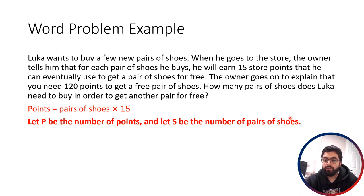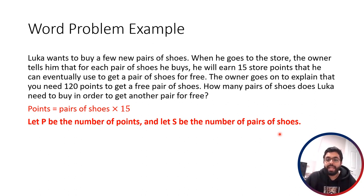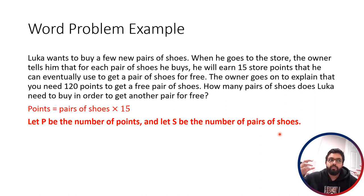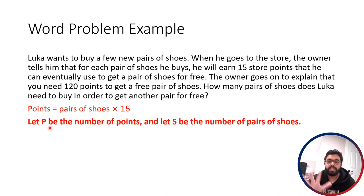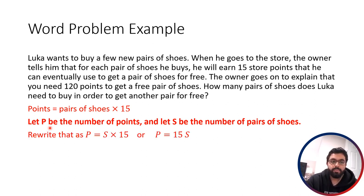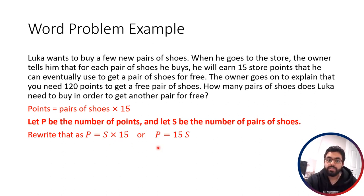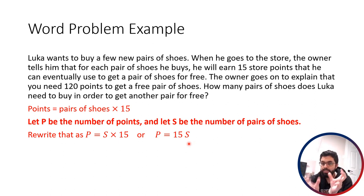You don't have to pick logical letters — you could use A and B, or X and Y — but you have to tell whoever is reading your work what those letters represent. So with P for points and S for pairs of shoes, we can write the equation: P equals S times 15. When you've got letters and numbers being multiplied together, put the number first. So we write P = 15S.